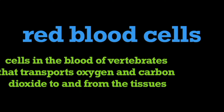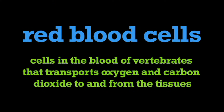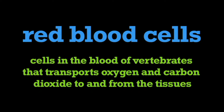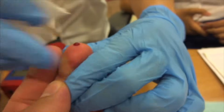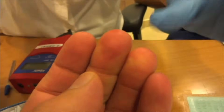In this program, we're going to learn about red blood cells. Red blood cells are cells in the blood of vertebrates that transport oxygen and carbon dioxide to and from the tissues. In the average person, one drop of blood contains about 5 million red blood cells.